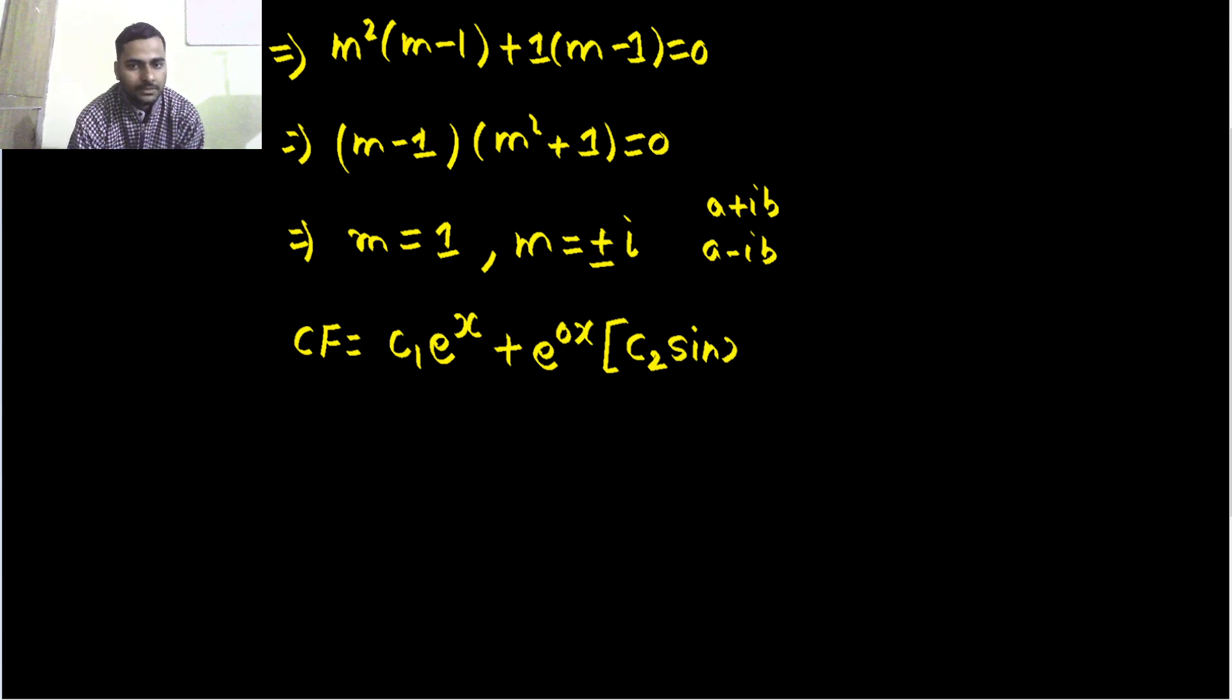cos bx doesn't matter plus c₃ sine bx, that wouldn't have mattered because we will have to add at the end. So this is what we are having now we can further simplify this because e^(0x) is 1.